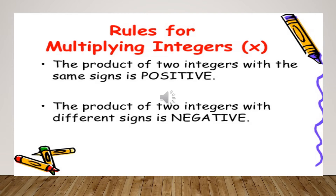It means that if the same signs are multiplied, the product is always positive. The second rule is that the product of two integers with different signs is negative. It means that if I am going to multiply minus 2 by 4, I will get minus 8 in the answer. One number was positive, one number was negative — when you multiply a positive by a negative number, your answer will be negative.